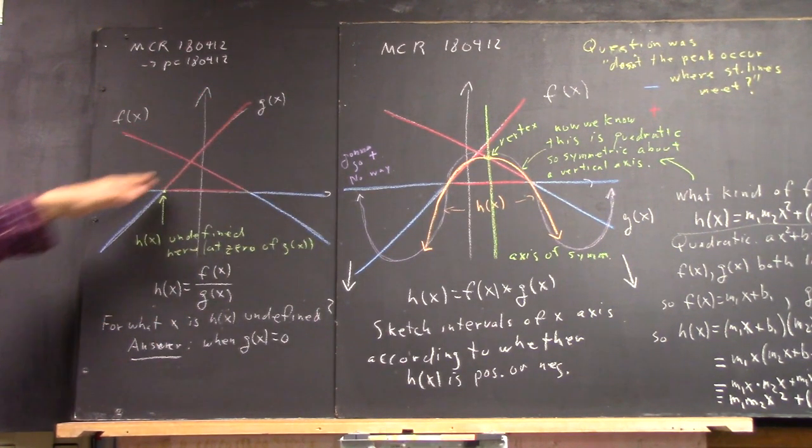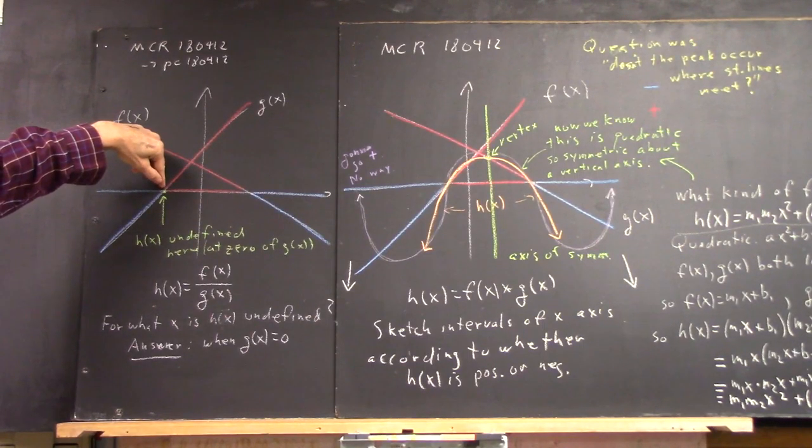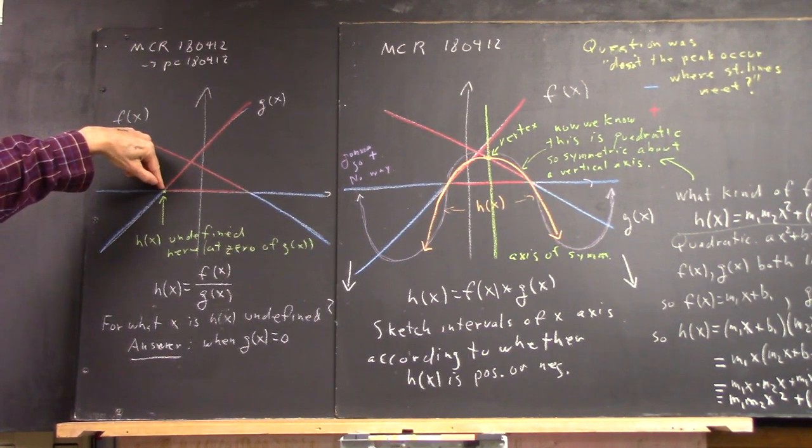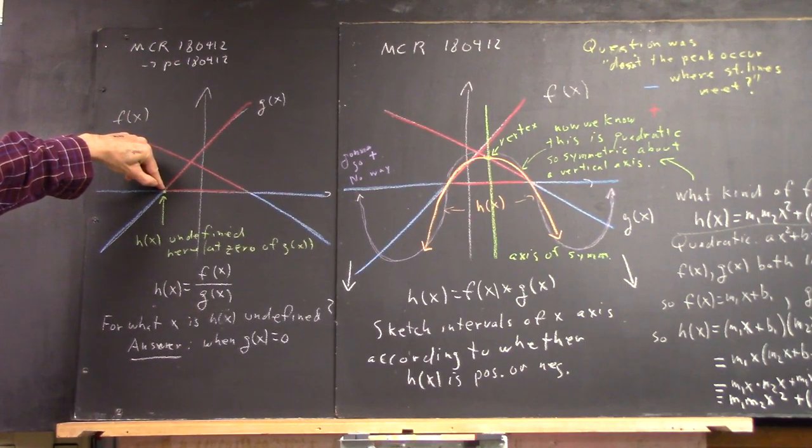And g of x can be zero, like right here. So your h of x function is undefined at this point.